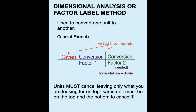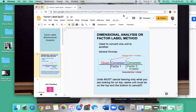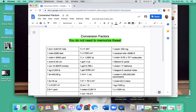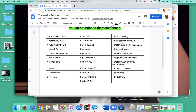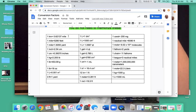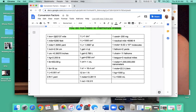Whatever unit you have at the top must be the same as the unit at the bottom of the next conversion factor. Continue that process until you reach your answer. Since there are different conversion factors, you and your partner may arrive at the same answer in two different ways. Conversion factors are two numbers or two equivalencies that are equal to each other — for example, one kilometer is equal to 0.62137 miles. This could be written forward or backward.